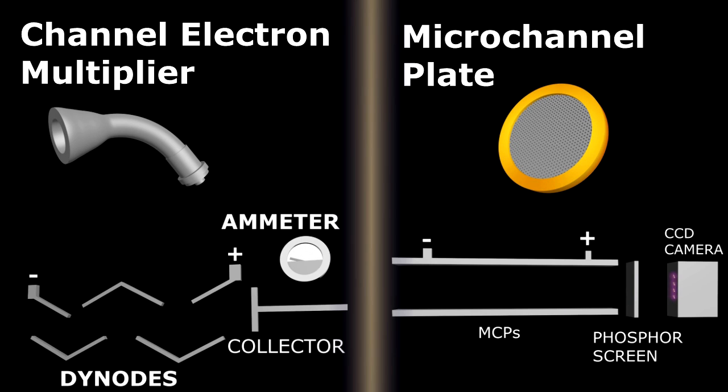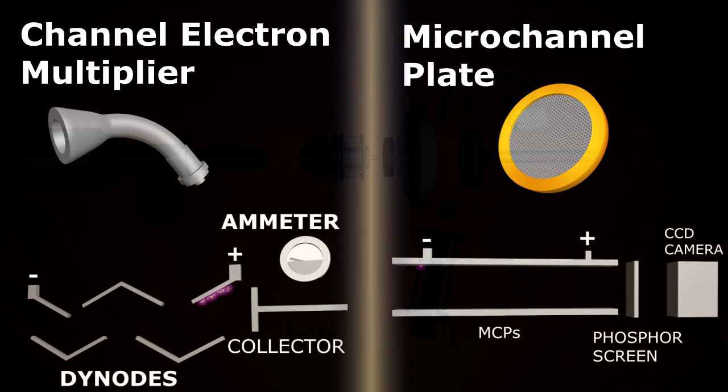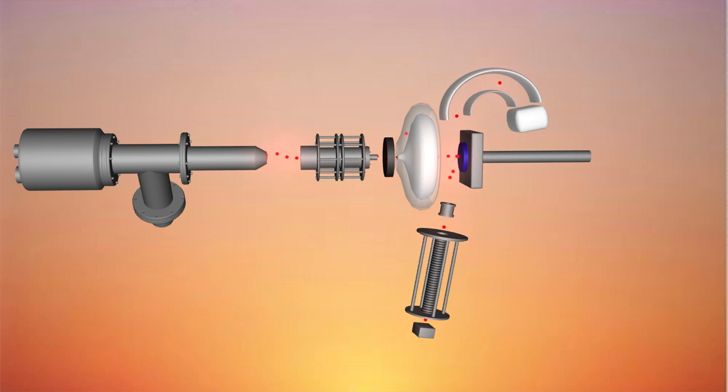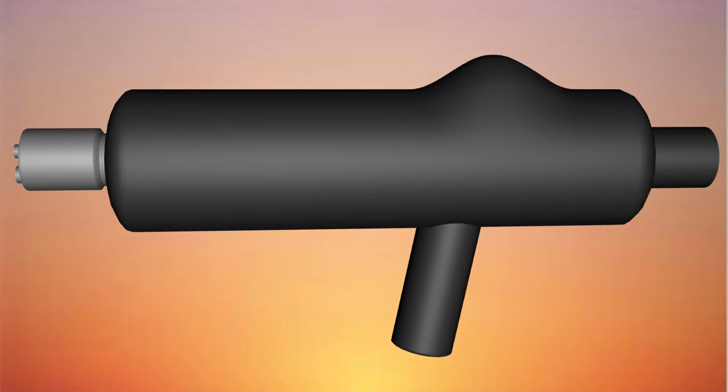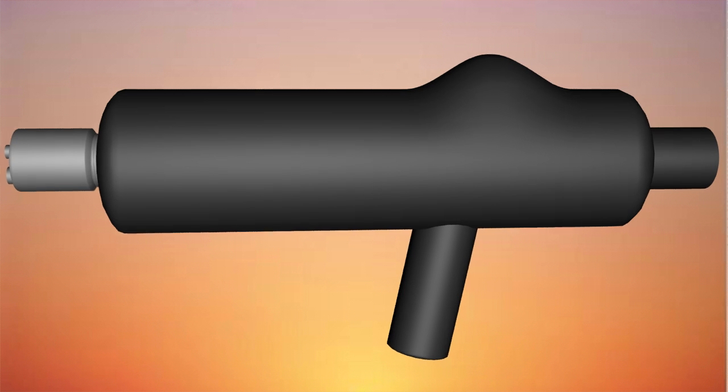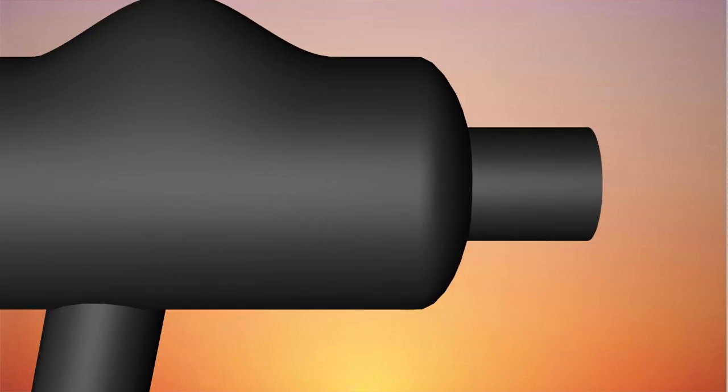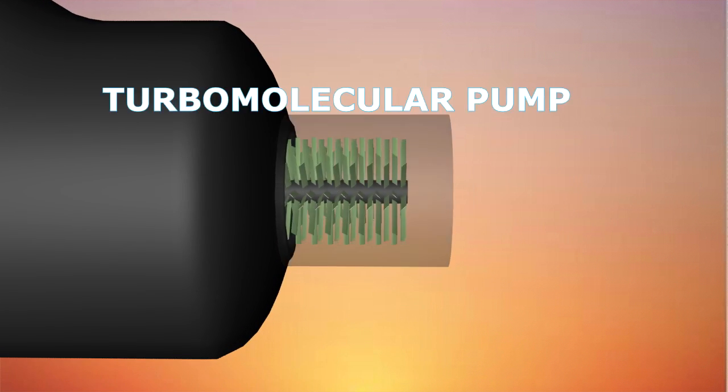Microchannel plates also give information about the particle's position, but that comes at the cost of sensitivity. These sensitive measurements with low-energy ion scattering spectroscopy are performed in ultra-high vacuum, which can be obtained with powerful vacuum pumps such as the turbomolecular pump and the ion pump.